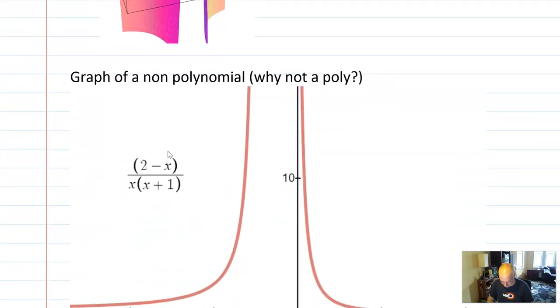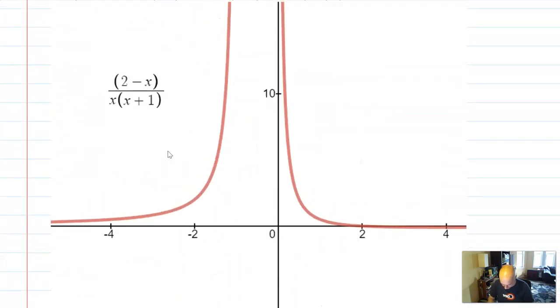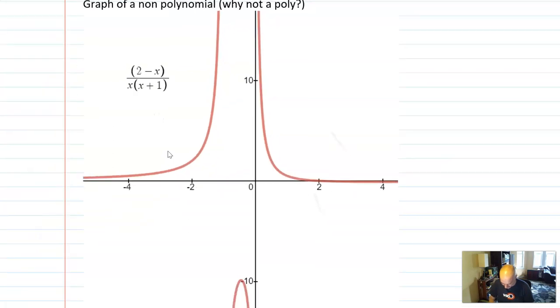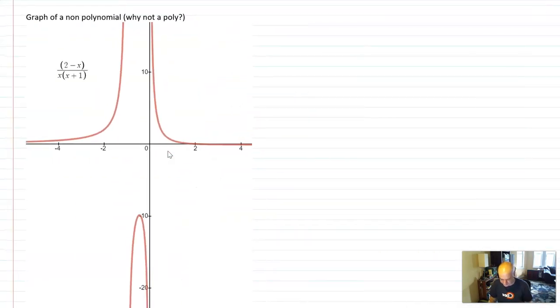And that's why polynomials are so beautiful and so nice. And I'll contrast this with something that's not a polynomial. Look at this graph. Okay, it's got a big gap in the middle. What happens in the middle? Well, there's like three pieces of this graph that came from one equation.